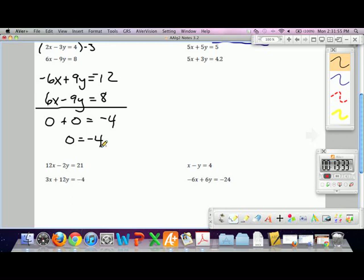You get an inconsistent system. If you get an inconsistent system, what do you know about those two lines? They're parallel.